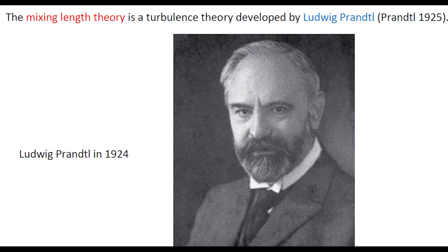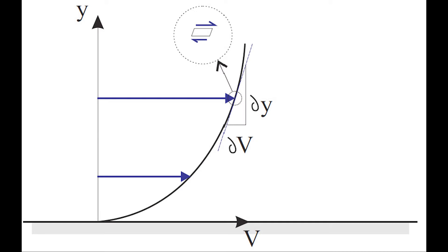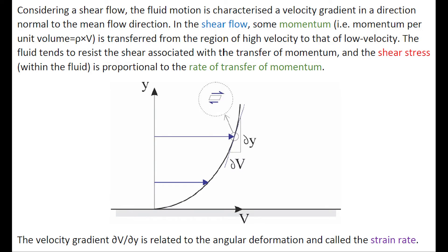Considering a shear flow, the fluid motion is characterized by a velocity gradient in a direction normal to the mean flow direction. In the shear flow, some momentum is transferred from the region of high velocity to that of low velocity. The fluid tends to resist the shear associated with the transfer of momentum.